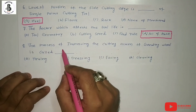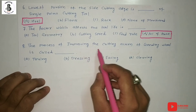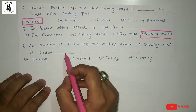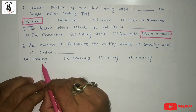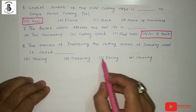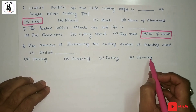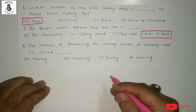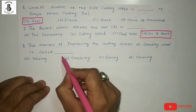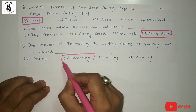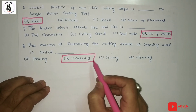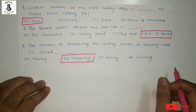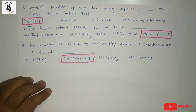Question 8: the process of improving the cutting action of a grinding wheel is known as what? Options: A) truing, B) dressing, C) facing, D) clearing. The process of improving the cutting action of a grinding wheel is called the dressing operation. By applying dressing, the cutting action of the grinding wheel is improved. The answer is B.